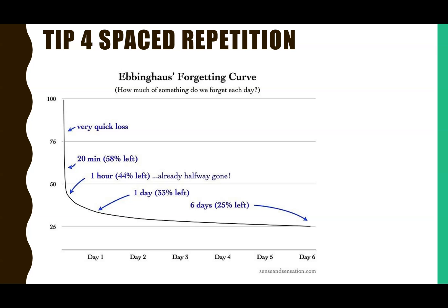Tip four: spaced repetition — this is about your strategy rather than a specific activity. Ebbinghaus's forgetting curve shows how quickly you forget something you've just learned when you don't review it: very rapid loss in the first 20 minutes, over half forgotten within an hour, and after six days you can only remember about 25% of what you learned in a lesson. If you don't review content until right before the exam, you'll essentially have to relearn it from scratch.